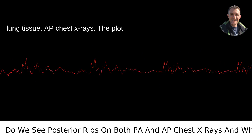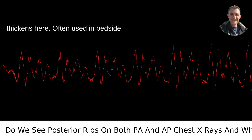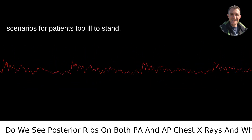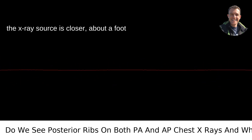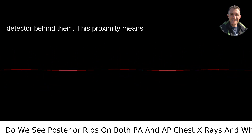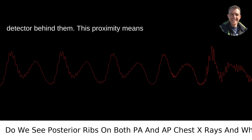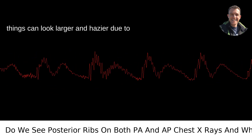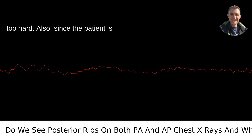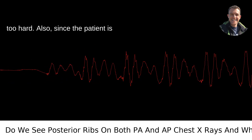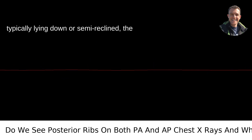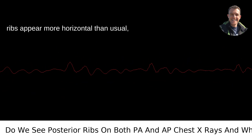AP chest X-rays — the plot thickens here. Often used in bedside scenarios for patients too ill to stand, the X-ray source is closer, about a foot or so from the patient's chest, with the detector behind them. This proximity means things can look larger and hazier due to magnification, and some of those ribs might seem like they've hit the gym a bit too hard. Also, since the patient is typically lying down or semi-reclined, the ribs appear more horizontal than usual.